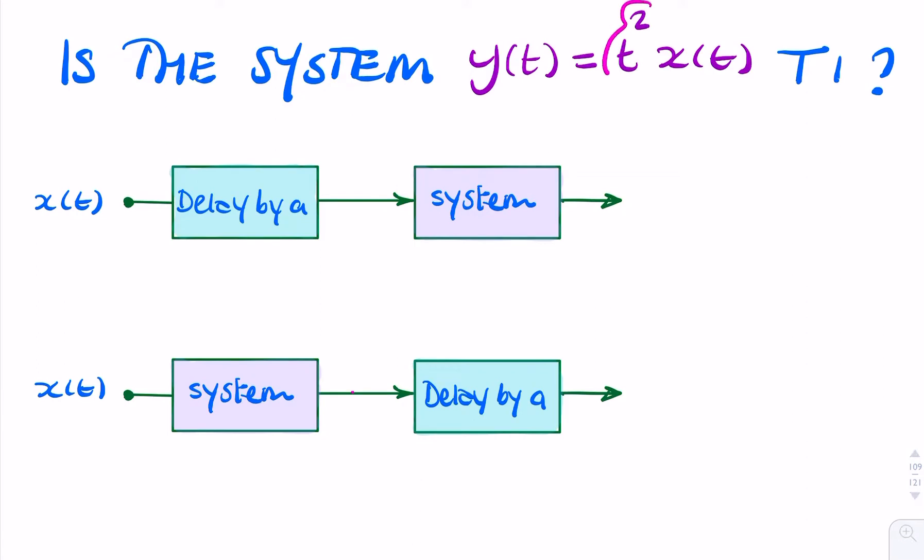Now, simply by observing t being given explicitly in the system expression, we know it can't be time invariant, because a time invariant system shouldn't depend on time. And this has an explicit dependence on time, because t is mentioned in the expression. But we can still demonstrate this mathematically.